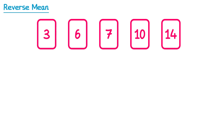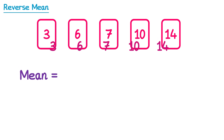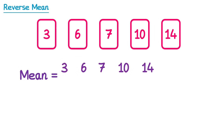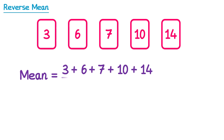If we have a list of numbers, to find their mean, we first of all add them all together. Then once we've done this, we divide it by how many numbers there are. In this list we have 5 numbers, so we would divide by 5.